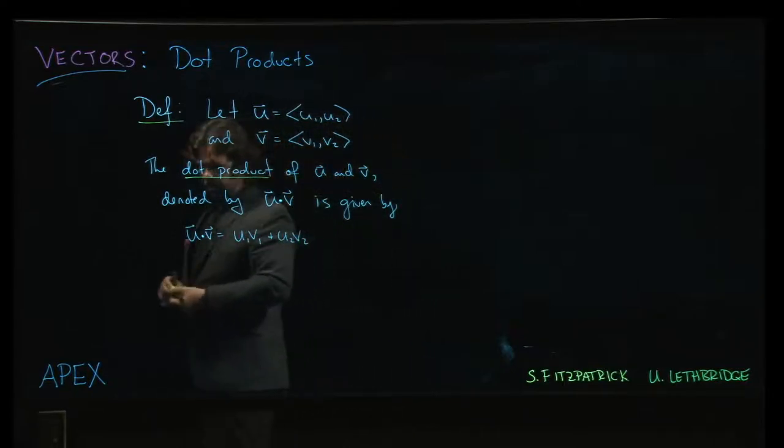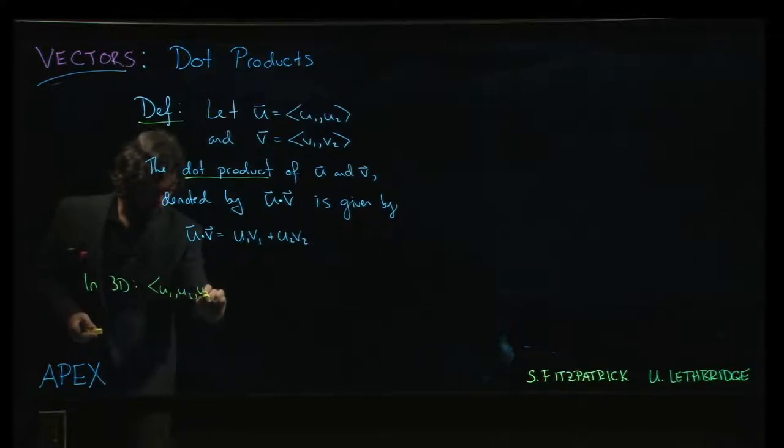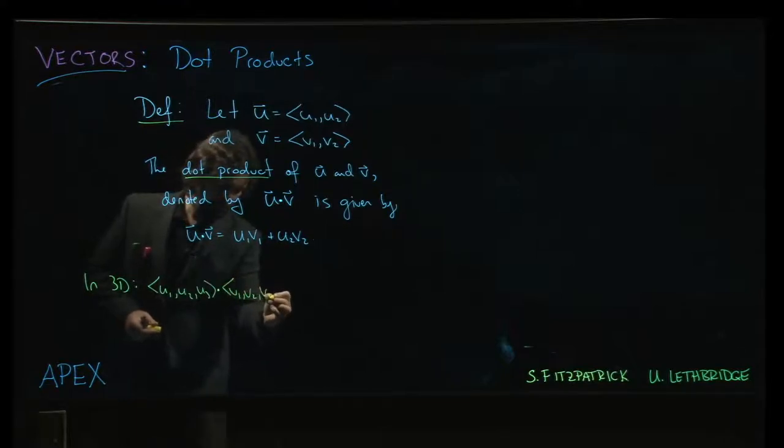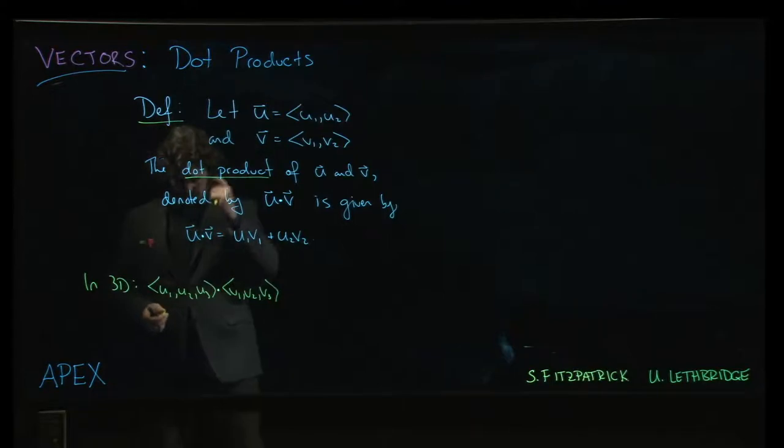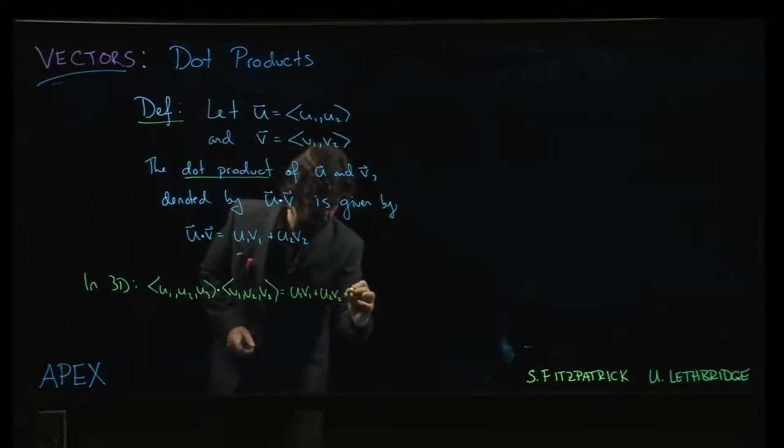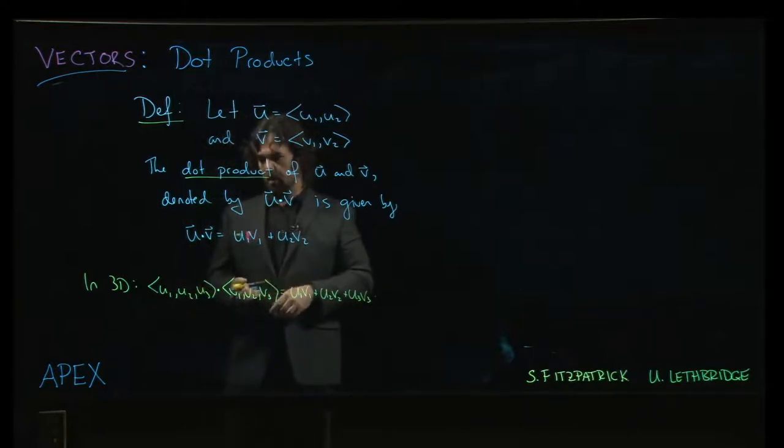Now, if I'm in three dimensions, and I have u1, u2, u3 dotted with a vector v1, v2, v3, it's going to be u1 times v1 plus u2 times v2 plus u3 times v3. We just add on the third term.